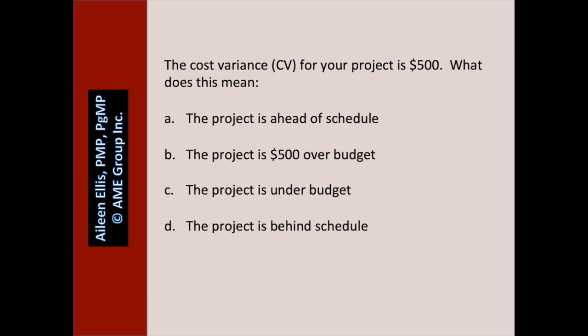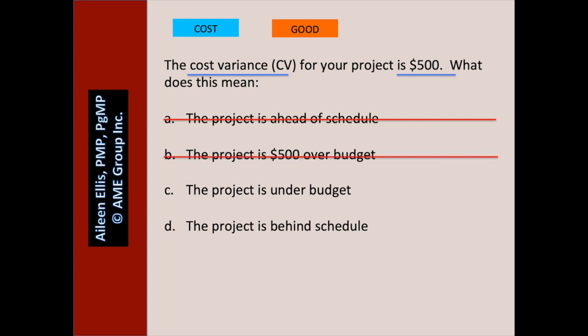The cost variance for your project is $500. What does this mean? Pause the video and answer the question. First I ask: is it about cost or schedule? It's about cost. $500 — that's a positive number, which is good. A: the project is ahead of schedule — we have no idea because we don't know the schedule variance. B: the project is $500 over budget — no, our cost variance is a positive number, that's a good thing. C: the project is under budget — that's the true answer. D: the project is behind schedule — we have no idea because we don't know the schedule variance.